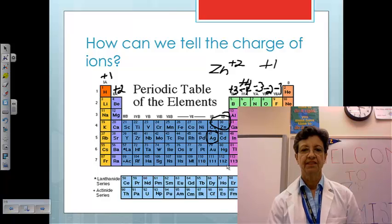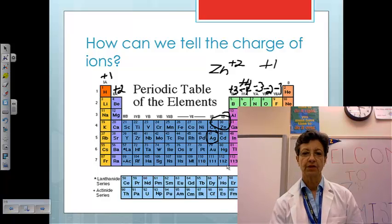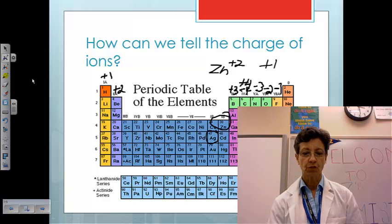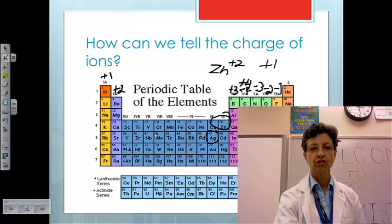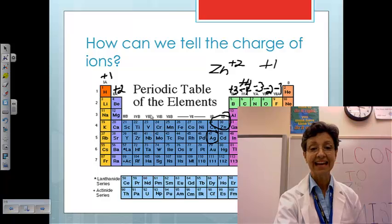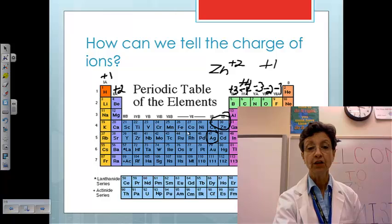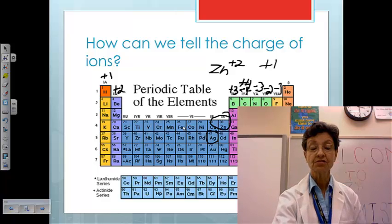For now, let's just leave it at that. There's one more thing that I want to tell you about. These atoms, right here in the center, these are called transition elements. These metals have a variety. They can have a variety of charges. In other words, they could possibly lose one electron, two electrons, three electrons in some cases.